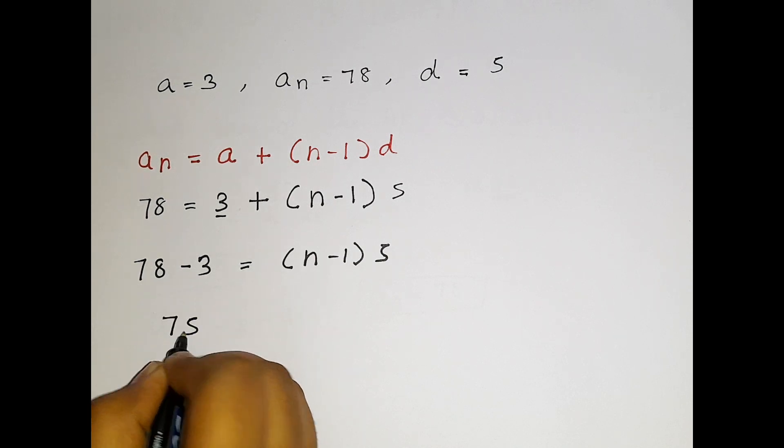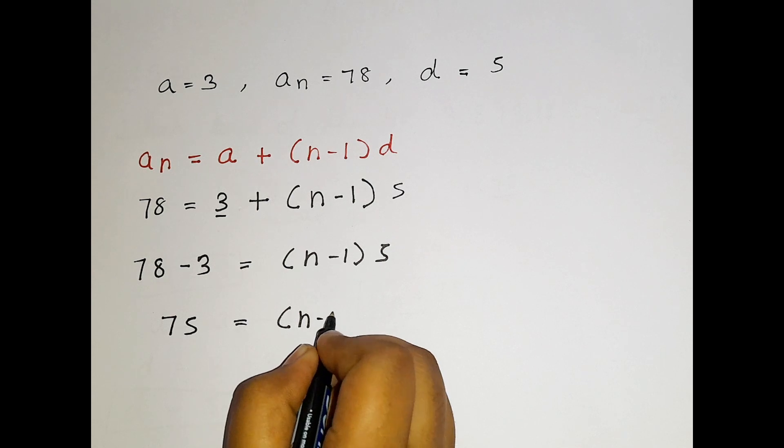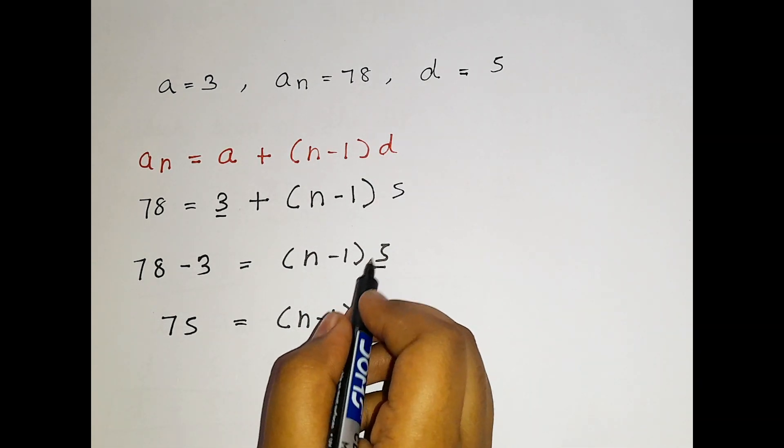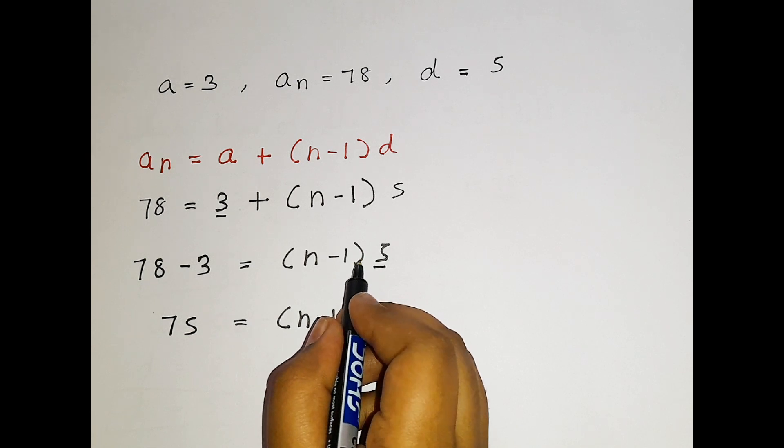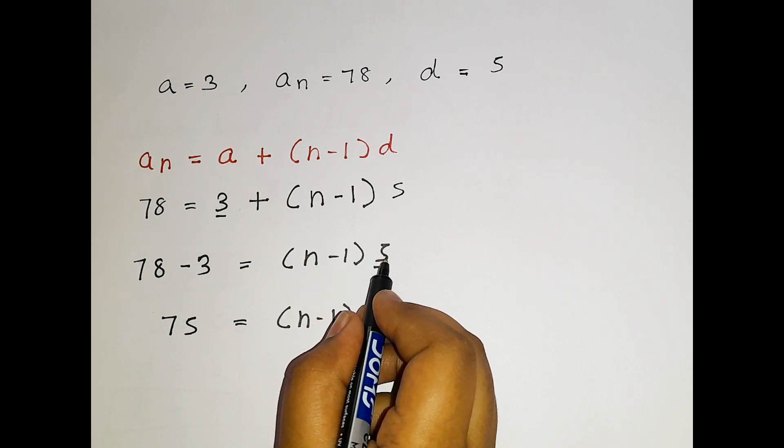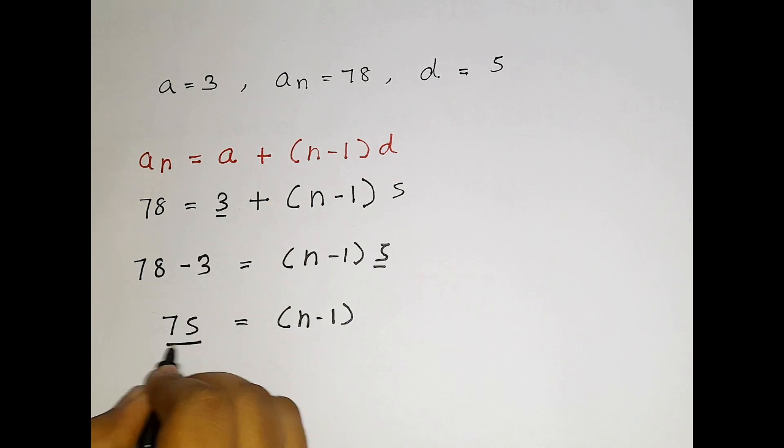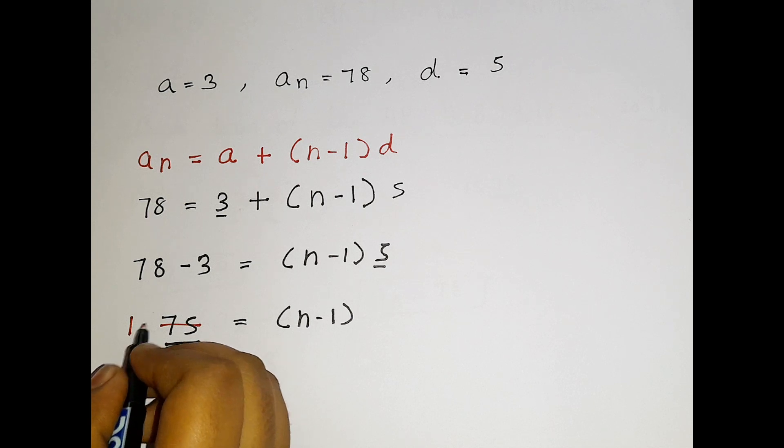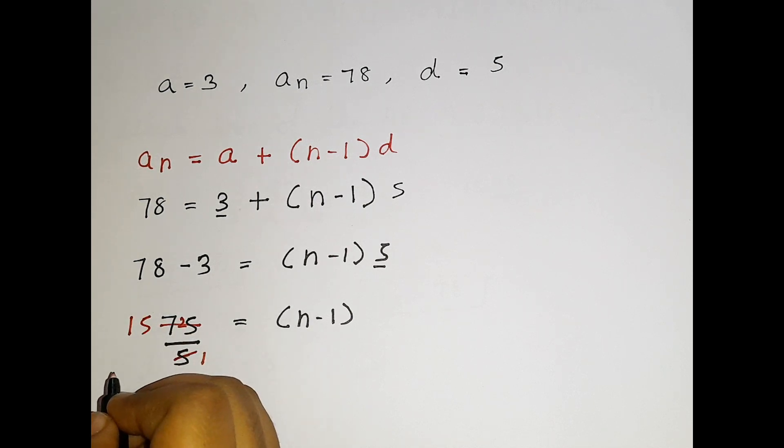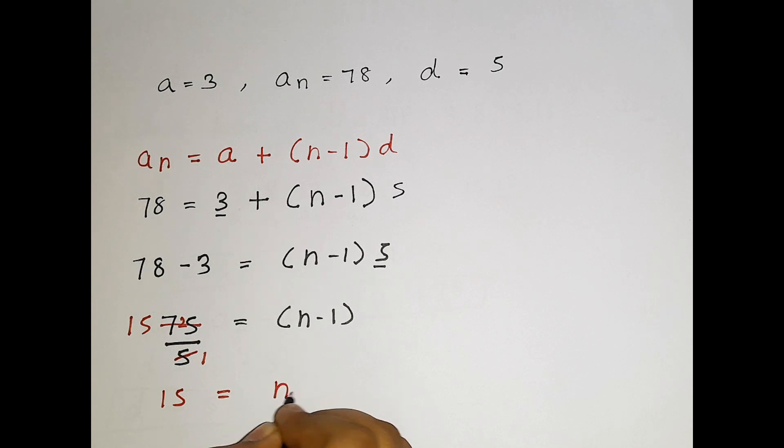75 is equal to n minus 1. Here we have 5. It is in multiplication and if I get this 5 to this side, it changes into division. I am just getting this 5 to this side. So it changes into division. Now let us cancel them. 1 5 is 5 and 1 5 is 5, 2 balance, 5 5 is 25.